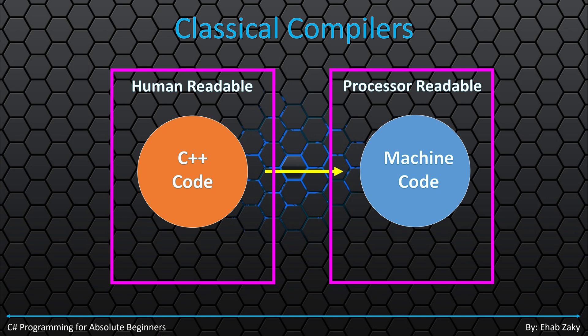To solve this issue, you have to recompile the C++ code on the new processor type to run properly. Microsoft has introduced an idea to resolve this issue with an important component of .NET Framework called Common Language Runtime, or abbreviated as CLR.